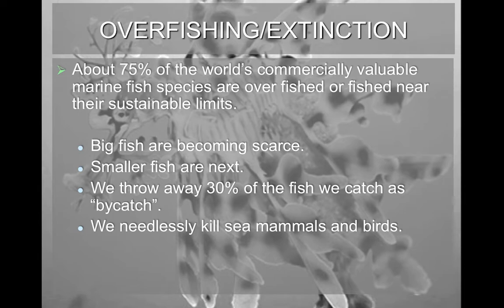Another big problem is overfishing. Approximately 75% of our commercially valuable marine fish are either overfished or fished near a sustainable limit. A sustainable limit is one at which we are able to replenish the population for the next generation; if we go past that, we end up in population decline. Big fish are becoming very scarce, and smaller fish are following suit quickly. We also catch fish called bycatch — not the targeted fish — and we generally don't consume it, so we throw it away, and by the time we get to it, it's already dead, killing that fish without even harvesting it for food.